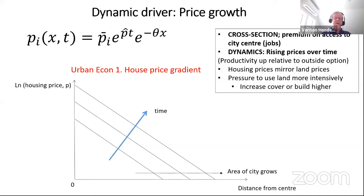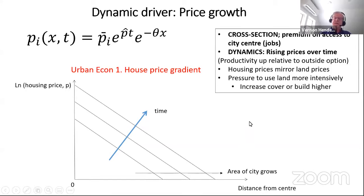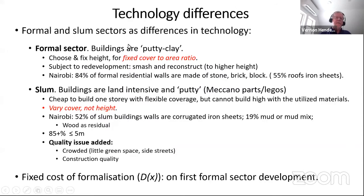We model the formal sector as what's called putty-clay. People have a fixed cover-to-area ratio. Buildings have a covered area ratio and a height — height times base gives you the volume. Once you build a building to a certain height, it becomes clay: you can't reshape it. If you want to change and build taller, you smash it and reconstruct to a higher height.